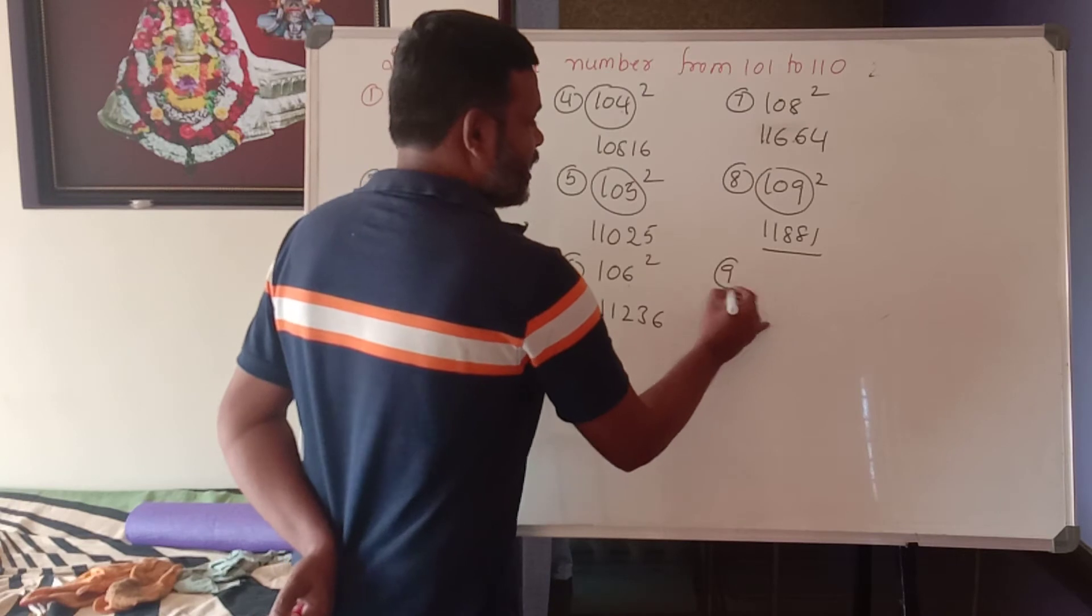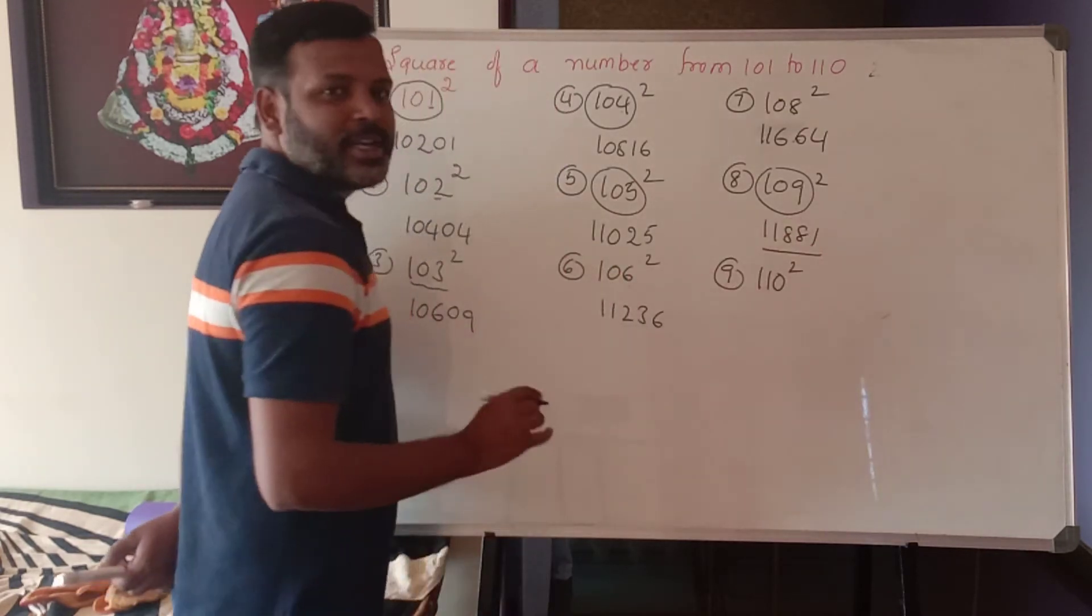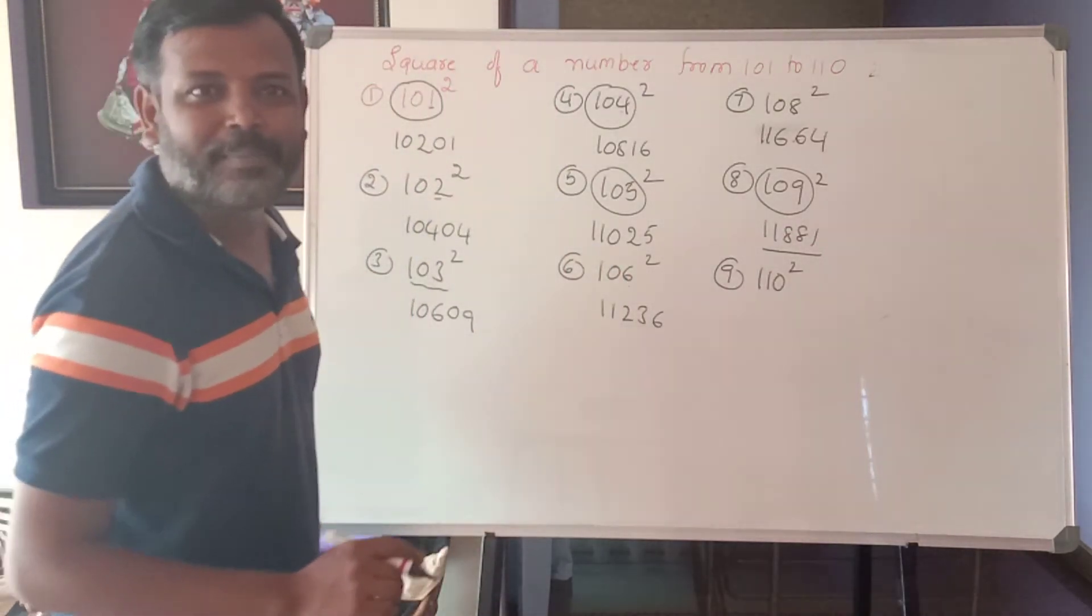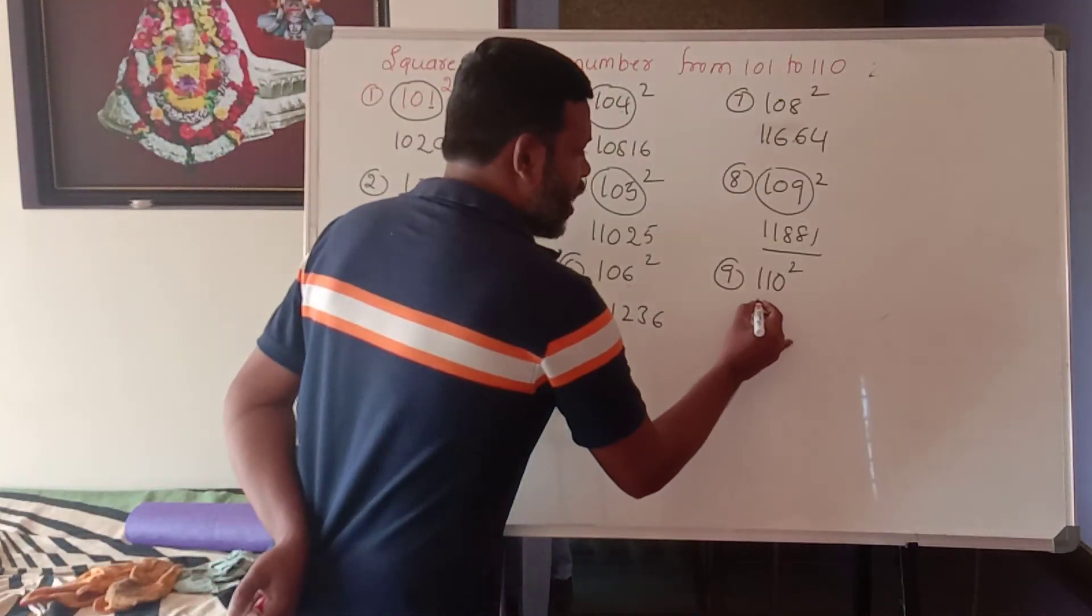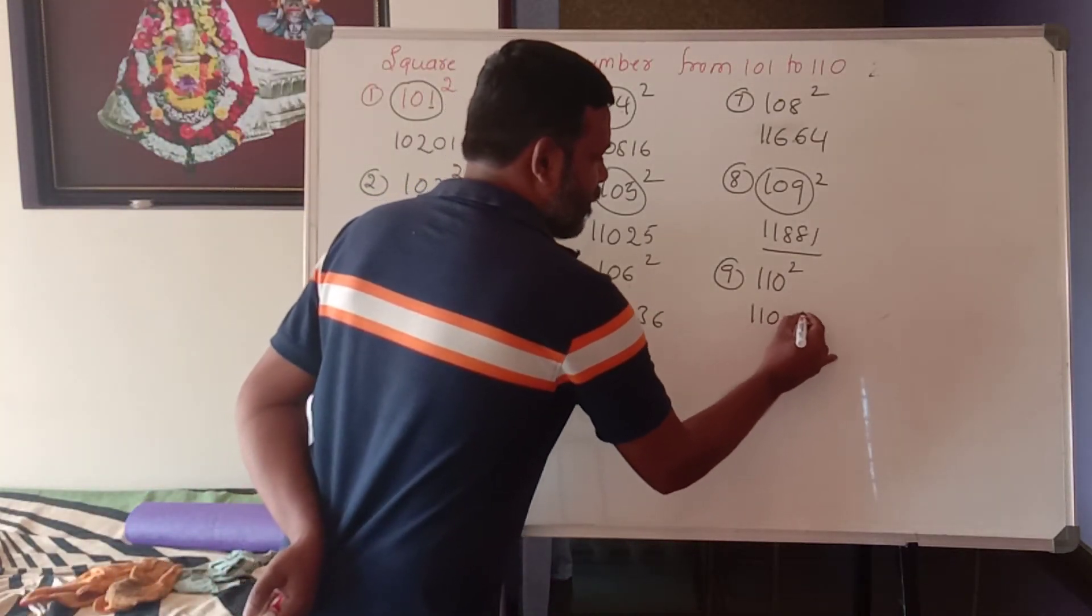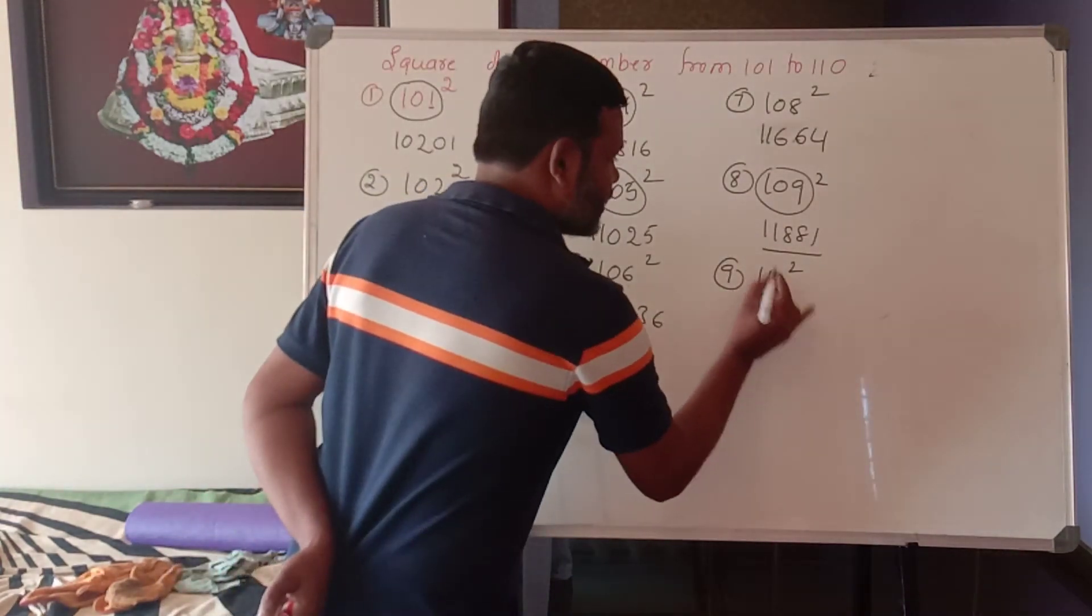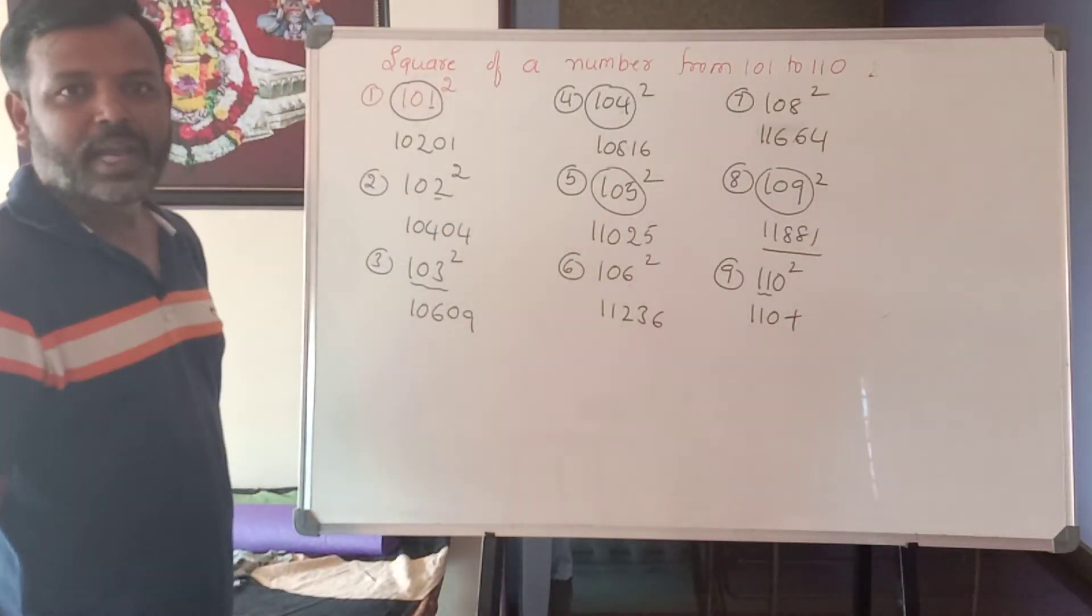The ninth one is 110 square. This is very, very special. 110 square. How to do here? 110, what is it? 110 plus first 2 digit. End with 0.